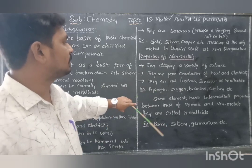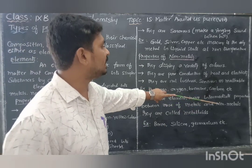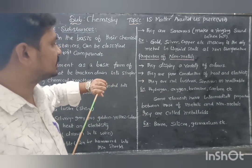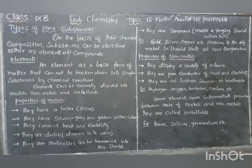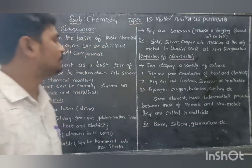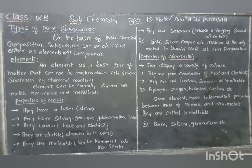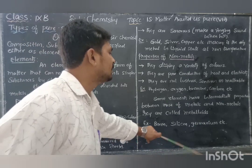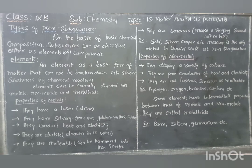Examples of nonmetals are hydrogen, oxygen, bromine, carbon, etc. Next, some elements have intermediate properties between those of metals and nonmetals — they are called metalloids, also called semi-metals. They show some properties of metals and some properties of nonmetals. Examples of metalloids are boron, silicon, germanium, etc.